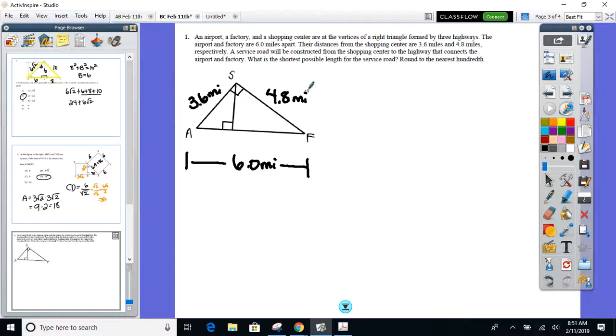Looks like we got a service road from the shopping center to the highway that connects the airport and the factory, so this little bad boy right here. What's the shortest possible length of the service road? We're trying to find the length of the service road. Tomorrow, are we going to approach this—is this going to be anything where you add in a 45 or 30 or 60? Absolutely not. Do not try to add it in. If you find yourself saying that tomorrow, stop it.